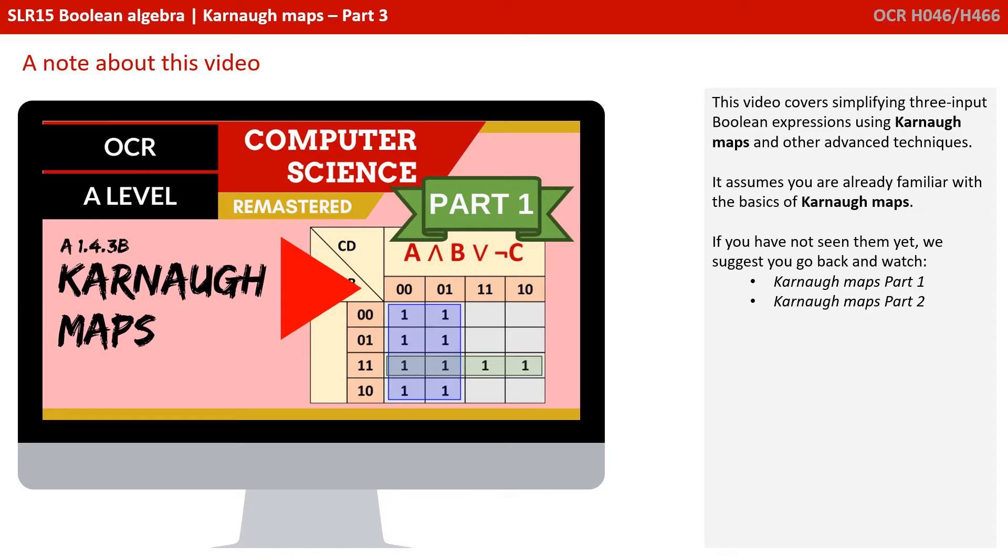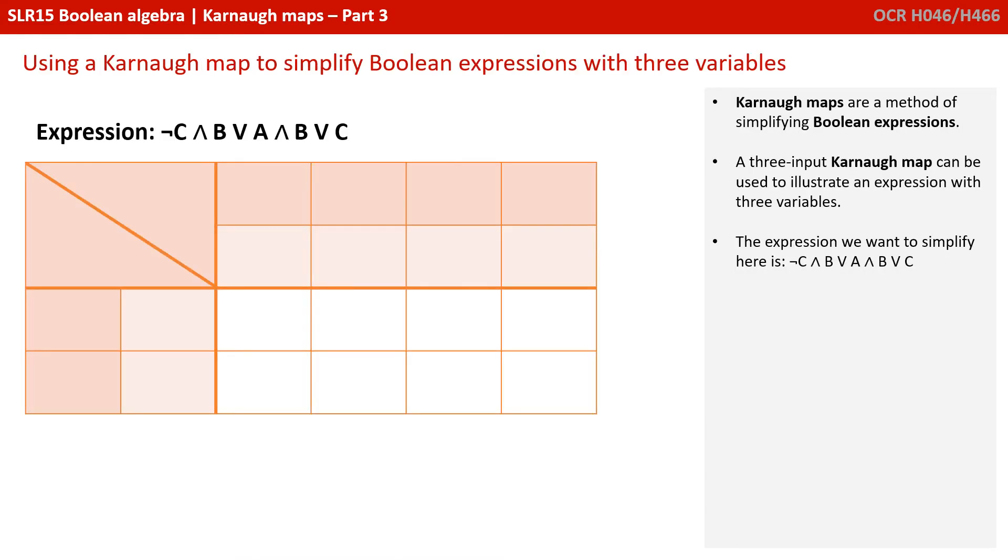This video covers simplifying three input Boolean expressions using Karnaugh maps, as well as some other advanced techniques. It's going to assume you've already watched and are familiar with both of the first videos in this four-part series. As we know, Karnaugh maps are a method of simplifying Boolean expressions. A three input Karnaugh map can be used to illustrate an expression with three variables.